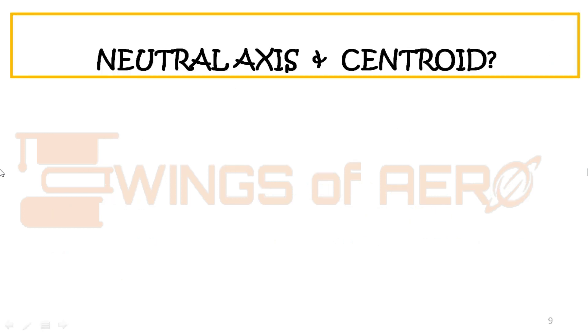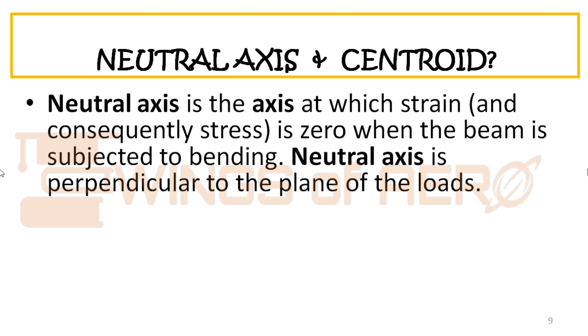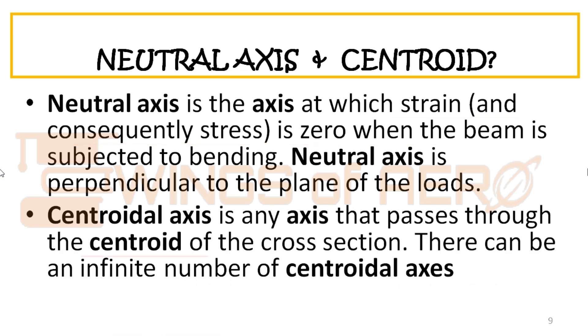What is the difference between neutral axis and the centroid? The neutral axis is the axis at which the strain is zero when the beam is subjected to bending. That means the neutral axis is also perpendicular to the plane of the loads. Whereas centroid is any axis that passes through the centroid of the cross section. There can be an infinite number of centroidal axes. That is the fundamental difference between neutral axis and centroid.